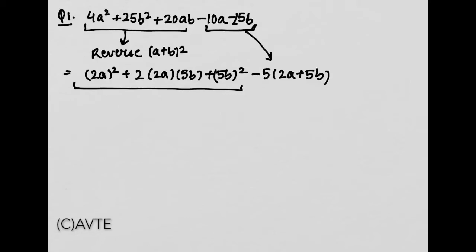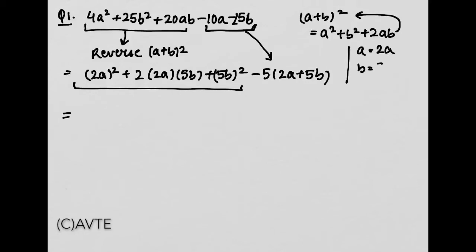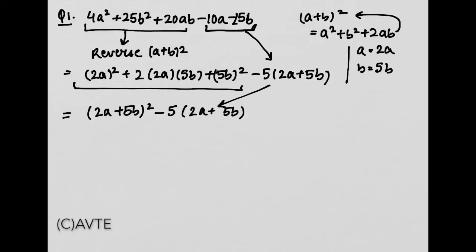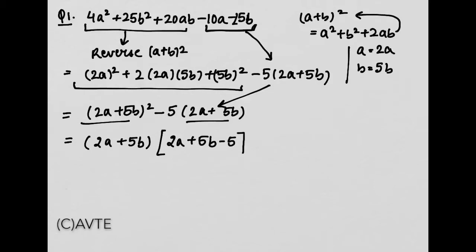Dhyan se dekhiye — yeh jo term hai, woh a plus b whole square ko jab kholte hain us form mein hai. Toh hum use compact form mein wapis laate hain. a hai hamara 2a aur b hai hamara 5b. Hence, 2a plus 5b ka whole square minus 5 bracket 2a plus 5b. Yahan se common nikalte hain: 2a plus 5b into 2a plus 5b minus 5. These are the factors of the given polynomial.